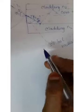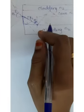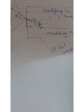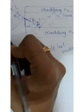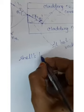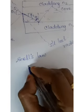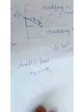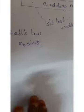Now we go to the derivation. According to Snell's law, N1 sine phi1 equals N2 sine phi2. Here the medium is air with refractive index N0, so according to Snell's law: N0 sine theta1 equals N1 sine theta2. The refractive index in air is N0 and the angle is theta1, while in the core the refractive index is N1 and the angle is theta2.